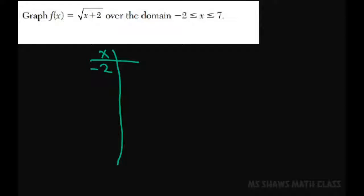So for the key points we need, I'm going to use negative 2 and I'm going to use 7. And we should know what the square root of x looks like, I'll draw that one as well.